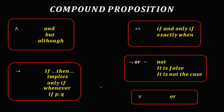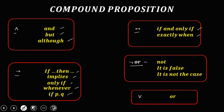Let's look at terms for compound propositions. For conjunction, we use 'and' or 'although.' For implication or conditional, we use 'if...then,' 'implies,' 'only if,' 'whenever,' or 'then.' For biconditional, we use 'if and only if' or 'exactly when.' For negation, we use 'not,' 'it is false,' or 'it is not the case.' For disjunction, we use 'or.'